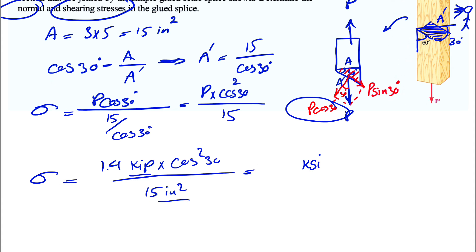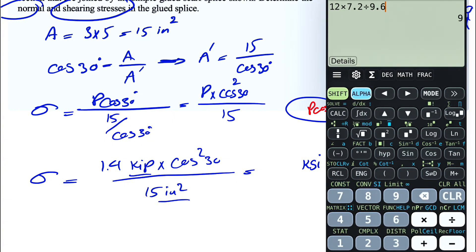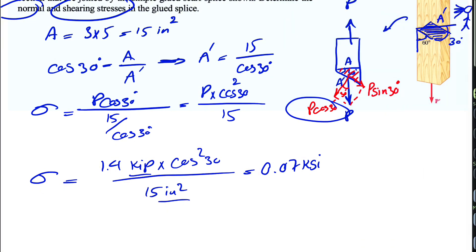And after that, we can convert it to psi by multiplying that by 1000. So let's just figure this out first. So we have 1.4 times cosine of 30 times cosine of 30 divided by 15. That's going to give us 0.7 ksi.